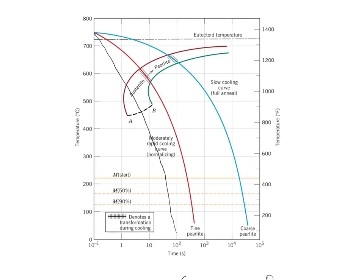What happens if we cool at an intermediate rate? A certain portion of the austenite will be transformed to pearlite. Till it reaches this point, certain portion of the austenite will have transformed to pearlite. The remaining austenite begins transforming into martensite upon crossing the martensite line. So here you will have pearlite and unreacted austenite. When it reaches this point, the unreacted austenite will transform into martensite. So in this region you will have pearlite plus martensite.